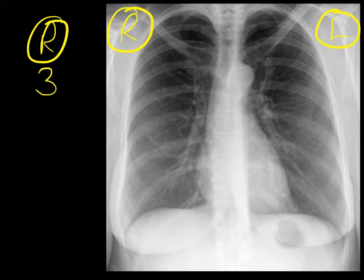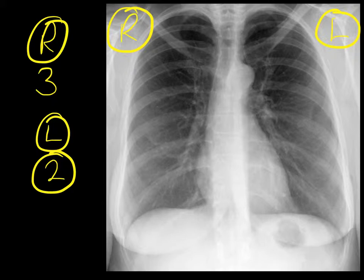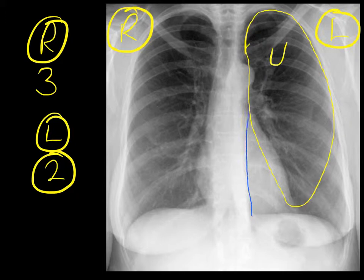The right lung has three lobes, and the left lung has two lobes. Let's look first of all at the left lung. The left lung is divided into an upper lobe, something like this projected on the chest X-ray, and a lower lobe, which overlaps it like this. Remember, these are three-dimensional, not two-dimensional structures.